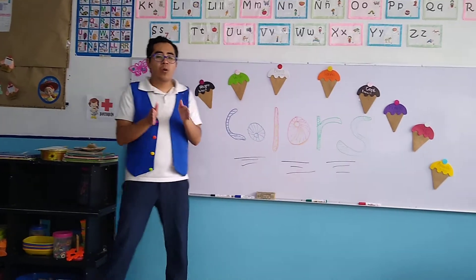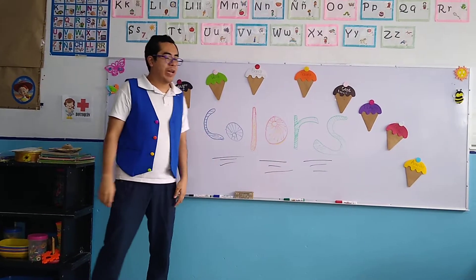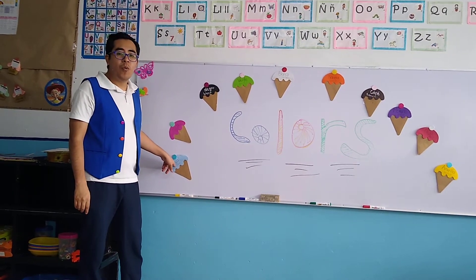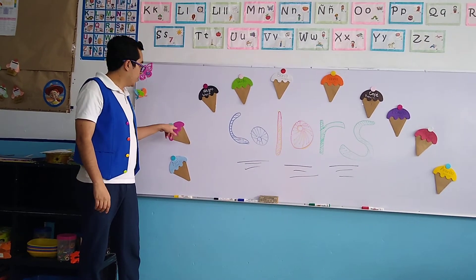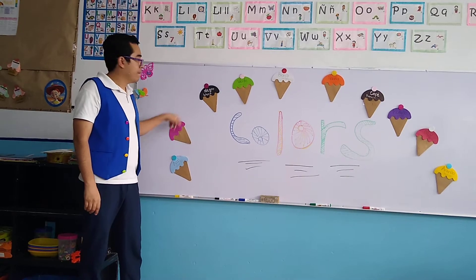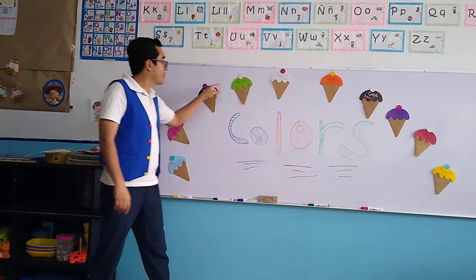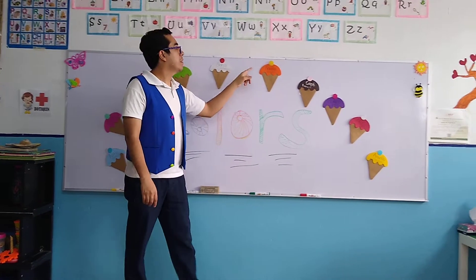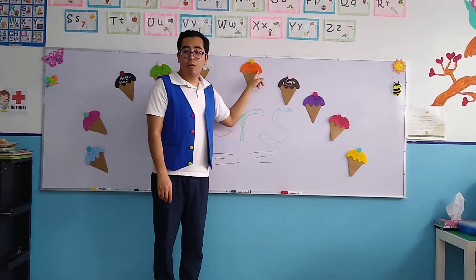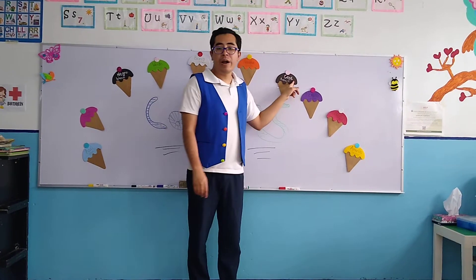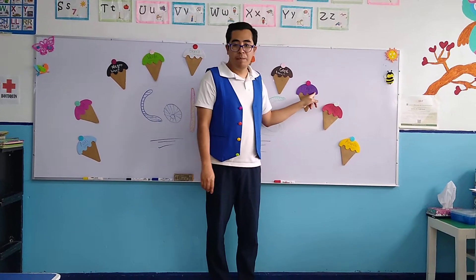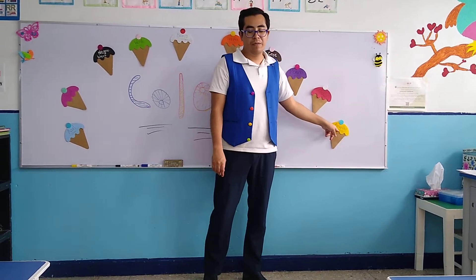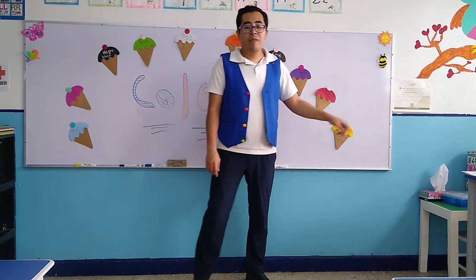Let's see color by color, okay? The first one is blue. The second one: pink, black, green, white, orange, brown, purple, red, and yellow.